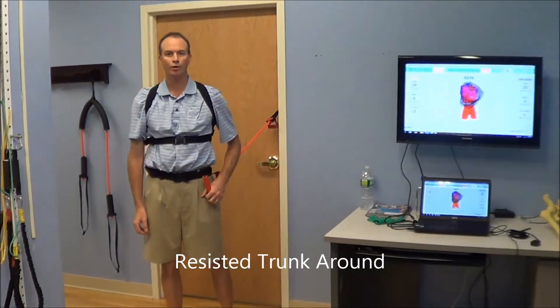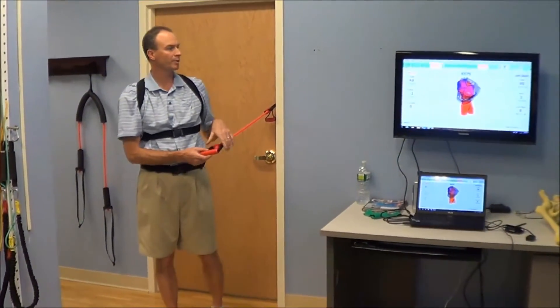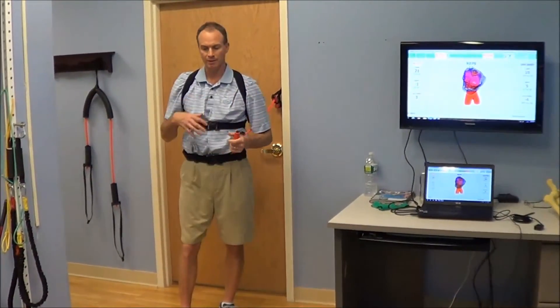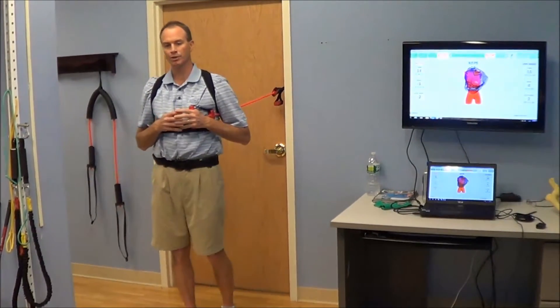This exercise is called a resisted trunk rotation and all you need for this is a piece of tubing. You're going to tie it at the door about shoulder height behind you. I'm using the KVAS system to let me know if I'm in the correct position or not.